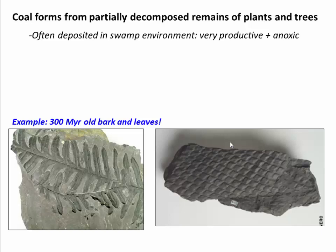So unlike oil and gas, coal forms primarily from the decomposed remains of plants and trees. Usually these are plants and trees that lived in a swamp environment and died. And because the swamp is very anoxic — there's no oxygen in the water — they weren't able to decay, so we preserve that organic material in the swamp. This is a little bit different than oil and gas, which are more commonly formed from finer-grained organic material on the bottom of the ocean.